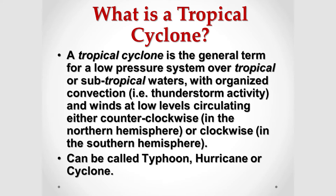Tropical cyclones are called different names. Here in the western Pacific, we call them typhoons. In the Atlantic and the eastern Pacific, you call them hurricanes. And in the Indian Ocean, they call them simply cyclones.